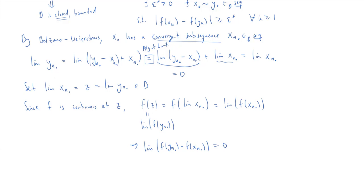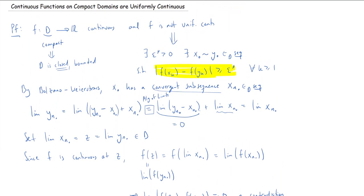This is a contradiction. Up above we showed that |f(xk) - f(yk)| ≥ ε* for all k — no matter how far out we go in the sequences, f never brings them closer than ε*. So it is not possible for the limit of f(yₙ·) - f(xₙ·) to be zero. This is our contradiction, which arose from assuming a continuous function on a compact domain could fail to be uniformly continuous. Therefore it cannot. Next time we move into the derivative — see you there.